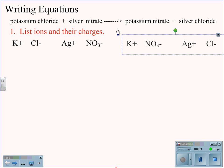The same holds true for the product side. Potassium is plus one, nitrate is minus one, silver is plus one, and chlorine is minus one.